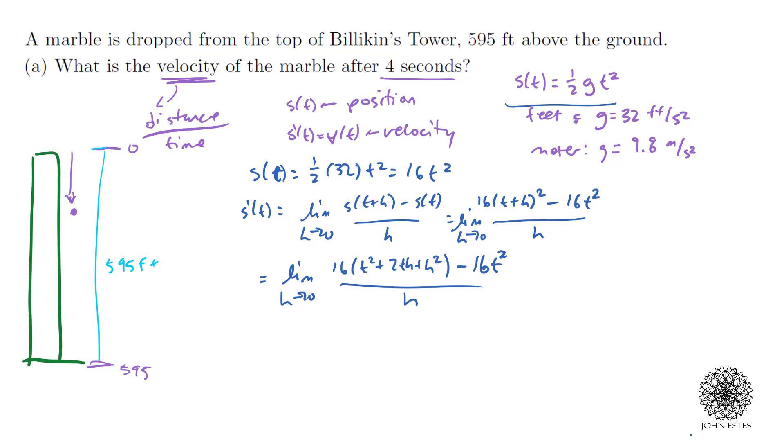If you distribute the 16 across, you have 16t² minus 16t², so we end up with the limit as h approaches 0 of 32th plus 16h² all over h. Since every term has a common factor of h, I can cancel out my h's. Finally, I have the limit as h approaches 0 of 32t plus 16h, and as h goes to 0, I end up with just 32t.